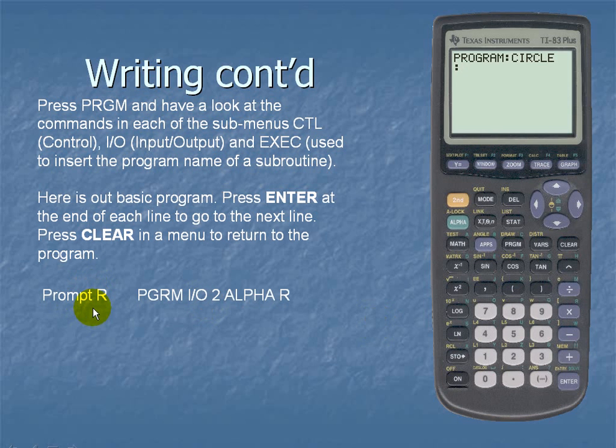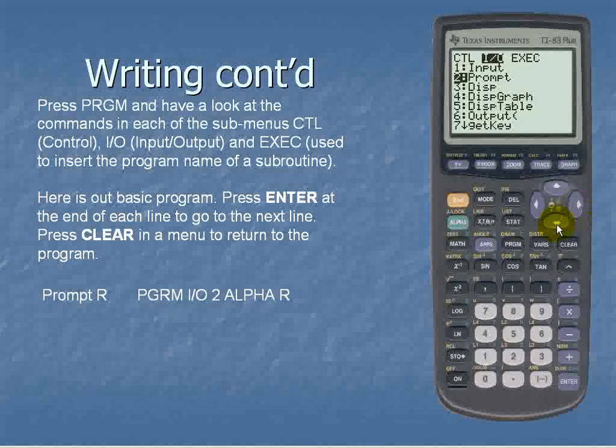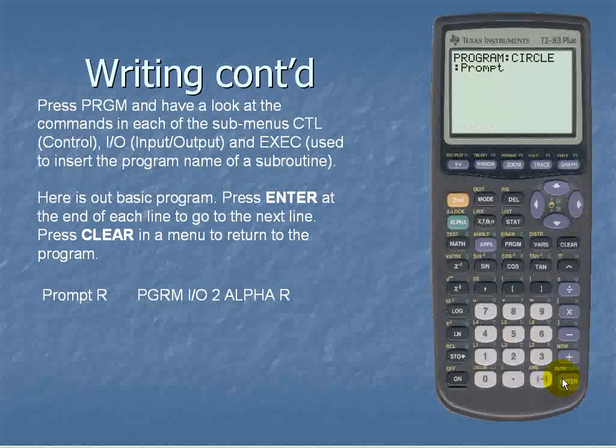The first thing we want to do is prompt for the radius. So in order to enter prompt we can't actually enter that in directly. We go to program. We scroll over to input output and prompt is our second choice. And we hit enter.